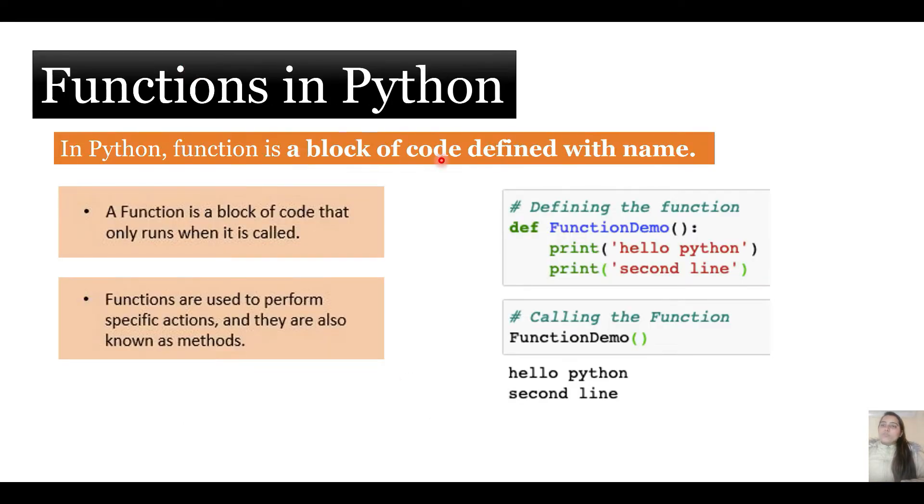A function is a block of code defined with a name. As you can see, the keyword is def over here. This is the function name, which is function demo, and you mandatory have to use these braces, then a colon, and then this is the function block which is print hello python, print second line. A function is a block of code that only runs when it is called.